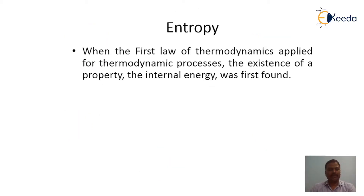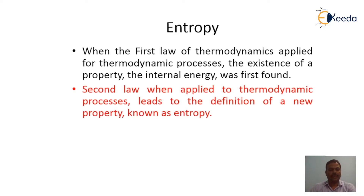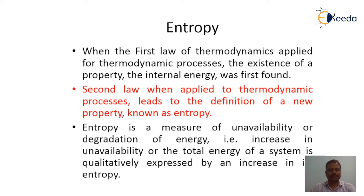The first law of thermodynamics was first applied to cycles, then it was applied to thermodynamic processes, and the existence of a property — the internal energy — was first found. The second law of thermodynamics was also applied to cycles first, then when it was applied to thermodynamic processes, that leads to the definition of a new property that is known as entropy. Entropy is a measure of unavailability or degradation of energy; an increase in unavailability of total energy of a system is qualitatively expressed by an increase in its entropy.